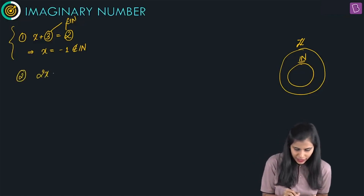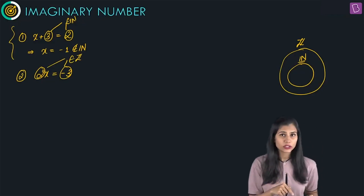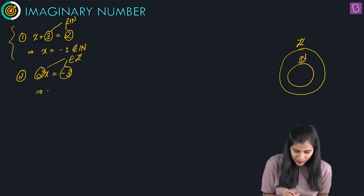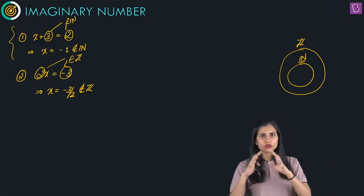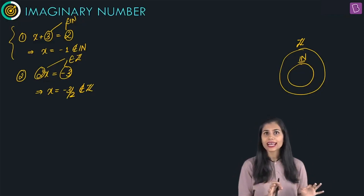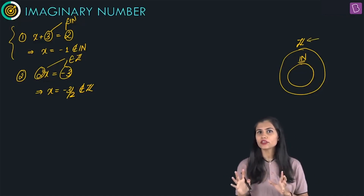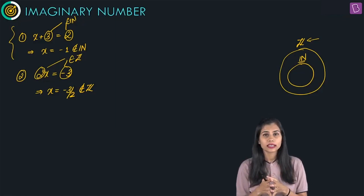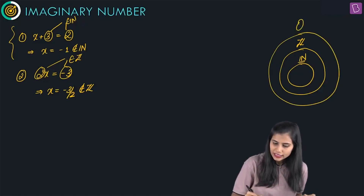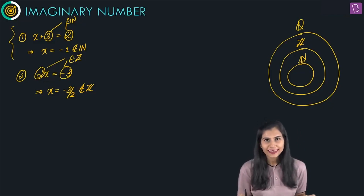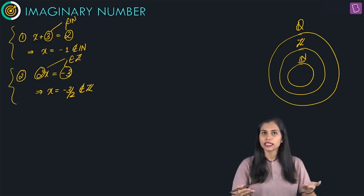Next came the equation 2x equals negative 3. Here, 2 and negative 3 are integers, and because 2 is not equal to 0, dividing both sides by 2 gives x equals negative 3 by 2, which is certainly not an integer. So, if I confine myself to integral values, this equation has no solution in the set of integers. In order to make it solvable, the set of integers was further extended to get the set of rationals, and thus any such equation was uniquely solvable in the set of rationals.